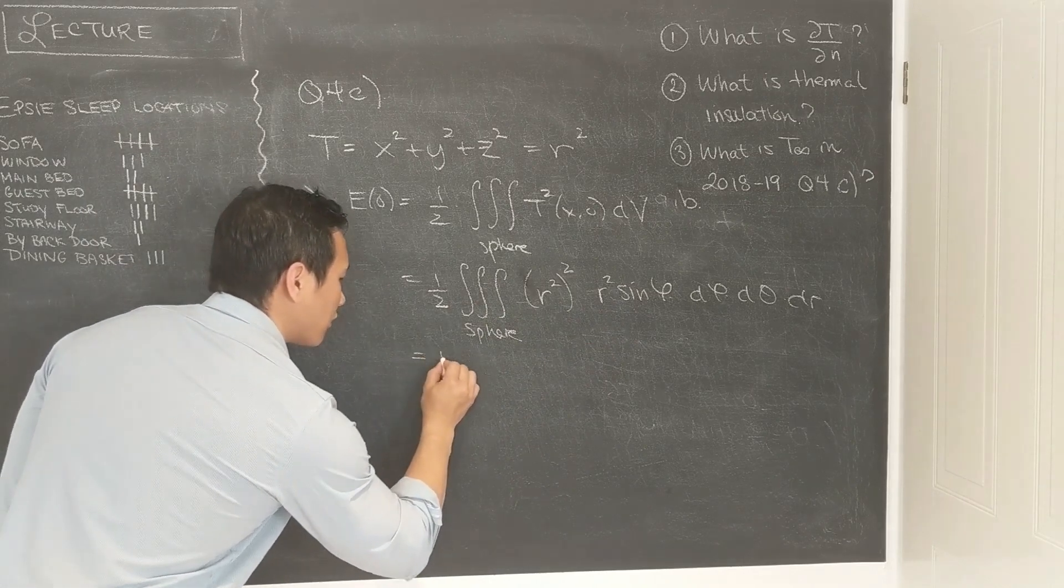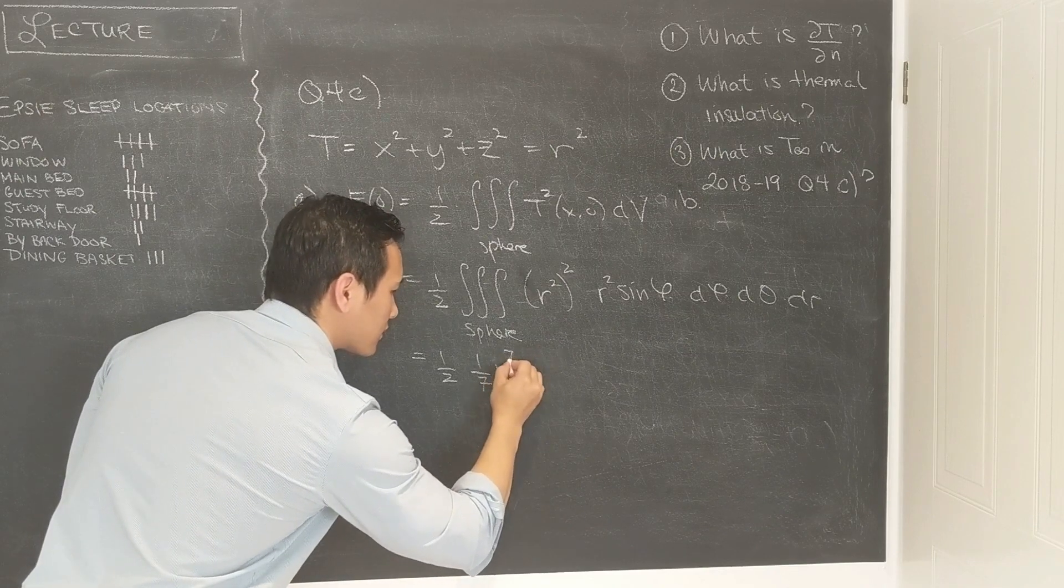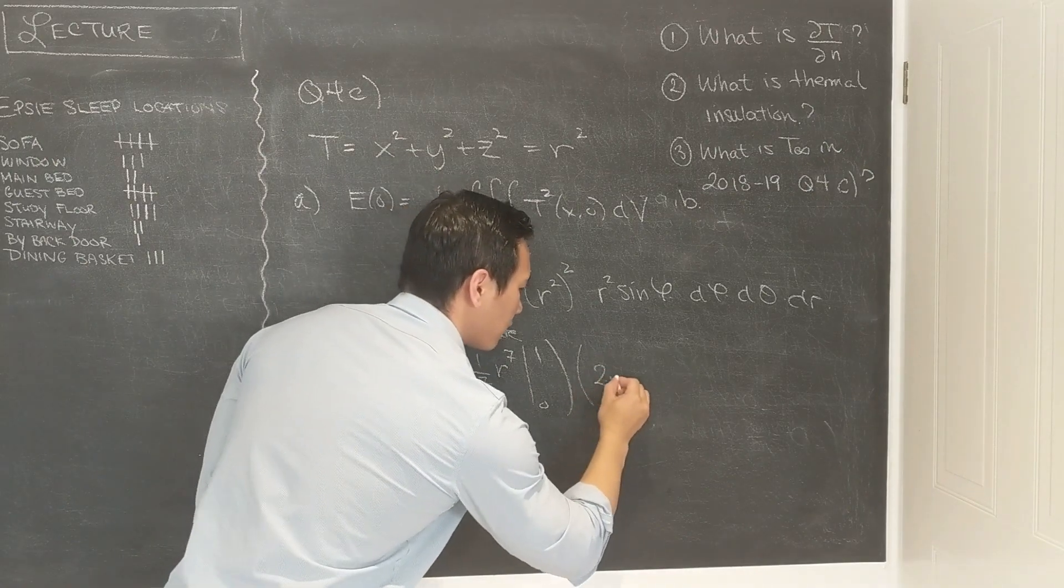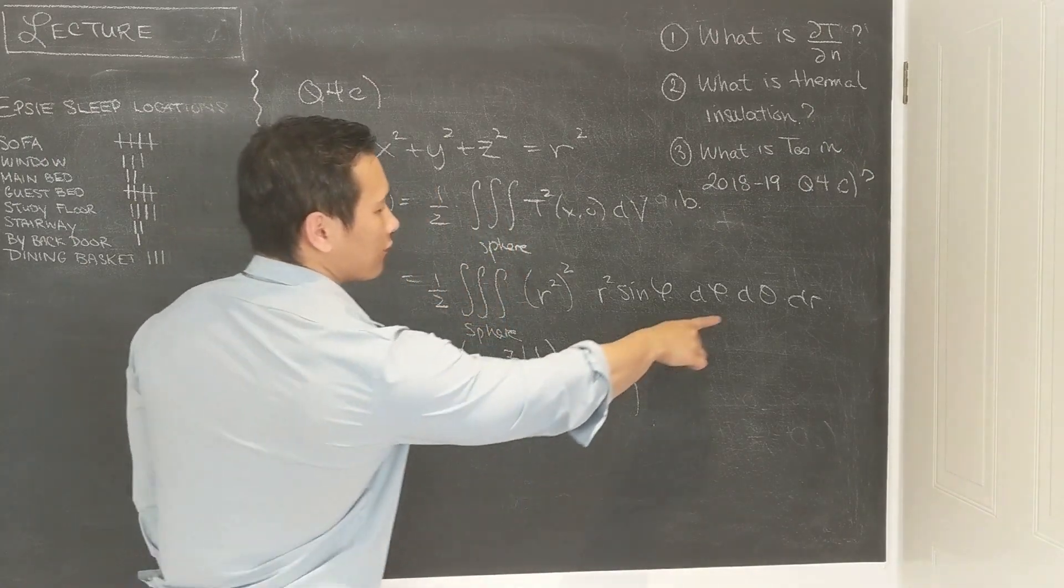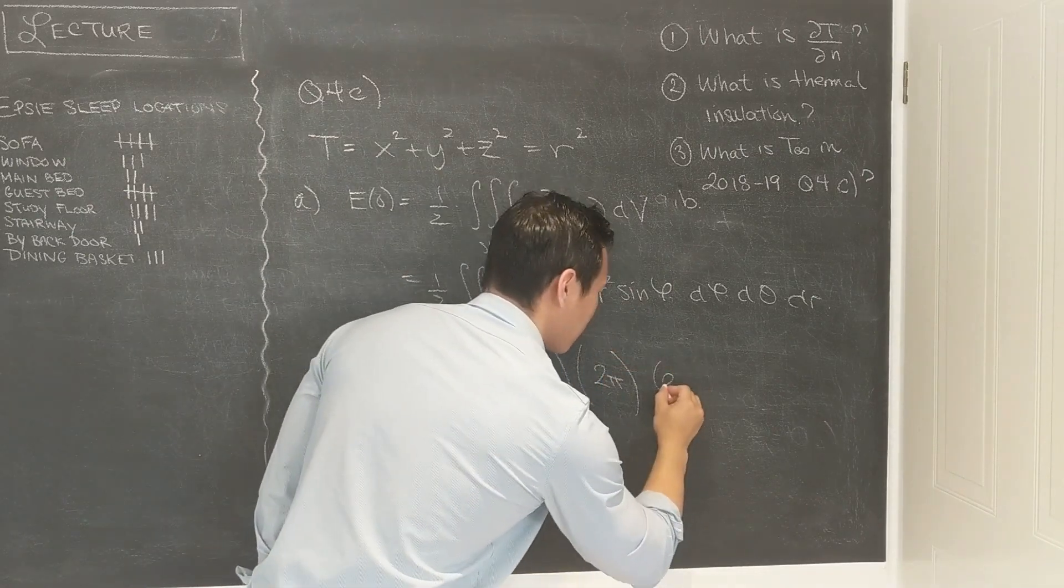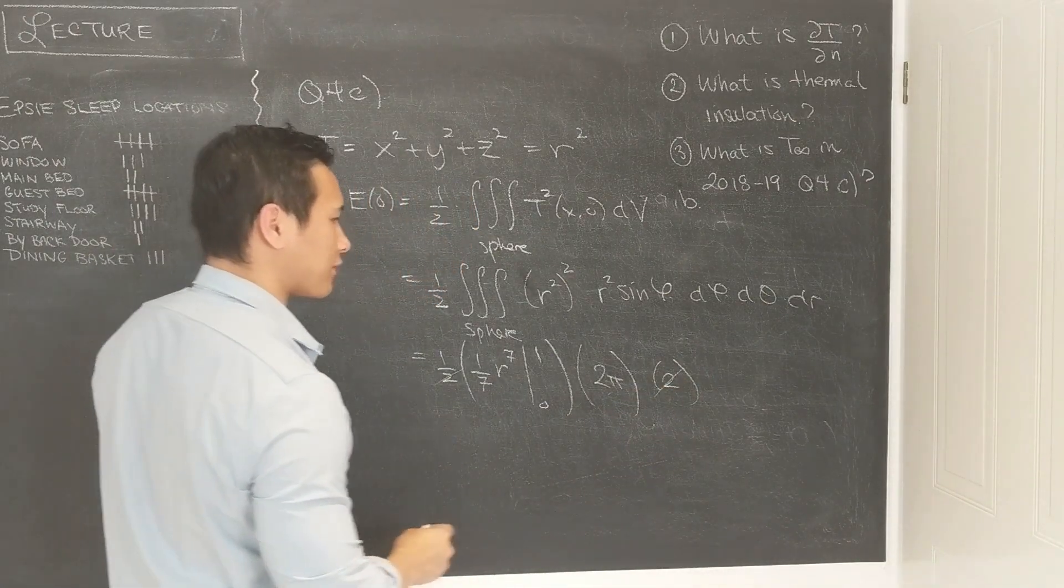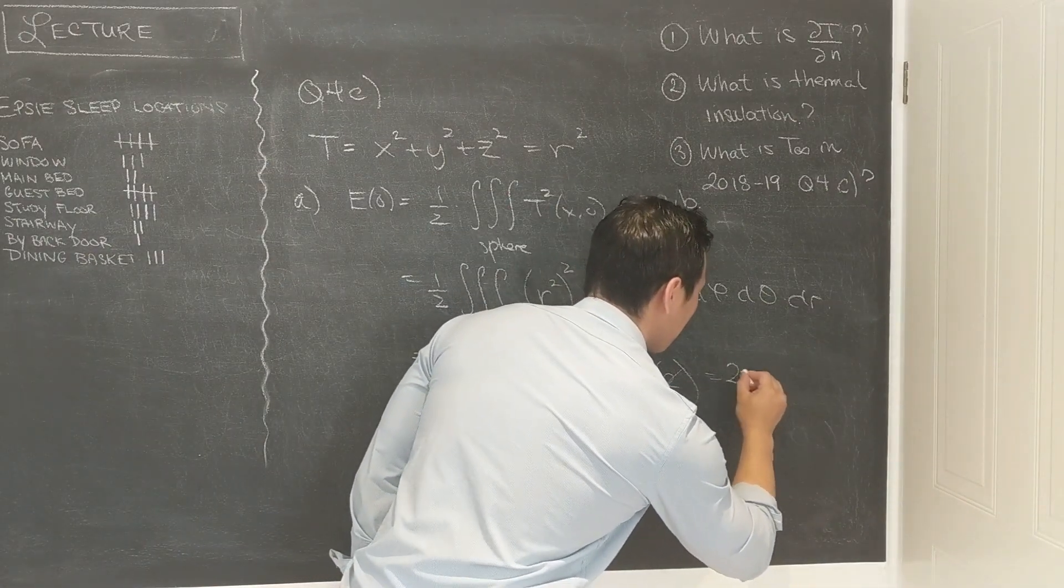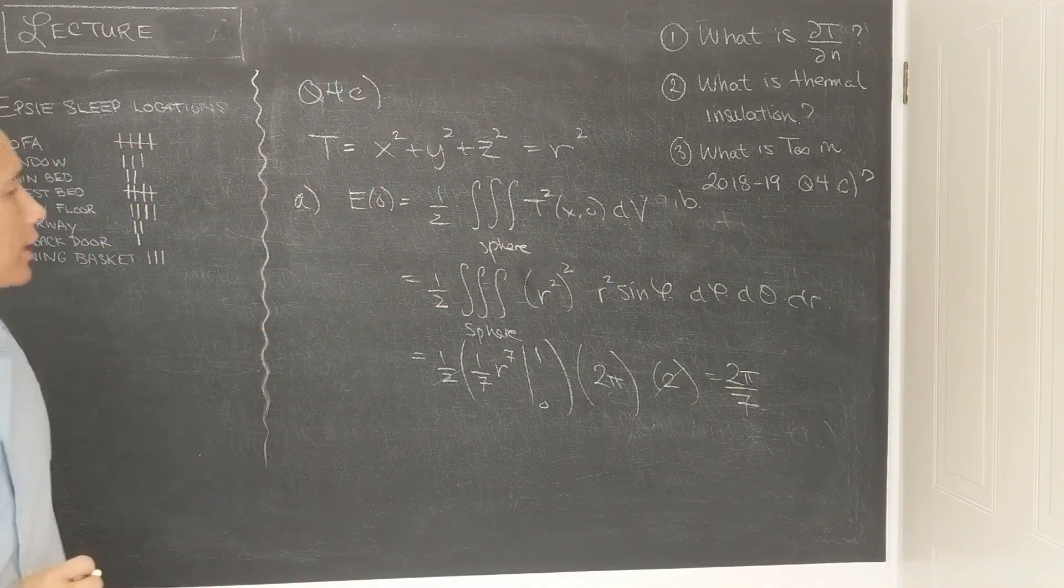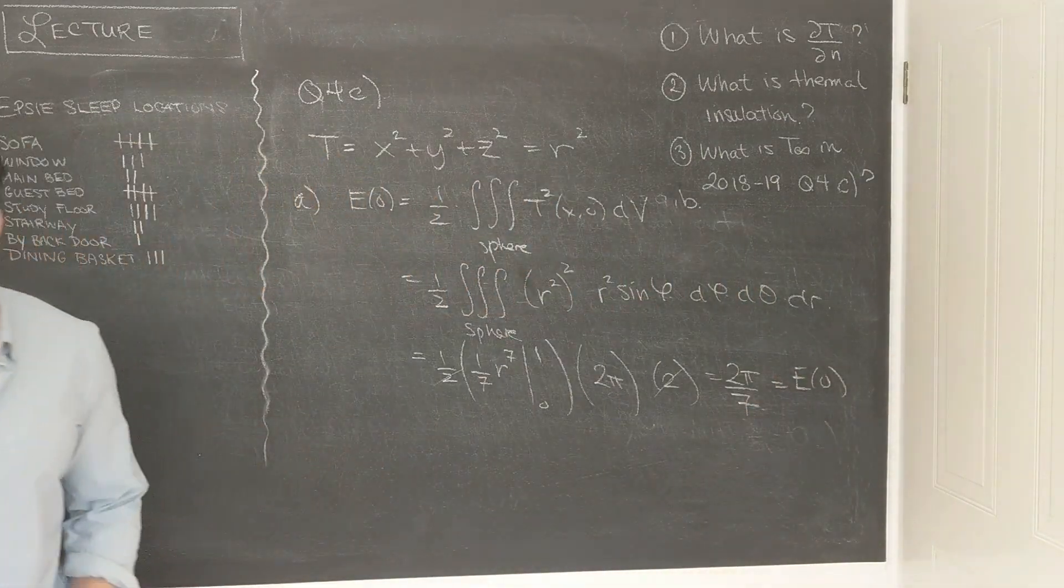So this is an integral of R to the 6, that gives you 1/7th, R to the 7th, evaluated from 0 to 1. And then you have to multiply that by 2π, which is the integral of d theta, and then multiply that by the integral of sine of phi from 0 to π, which is 2. So in total the 2's cancel, and it looks like you're left with 2π over 7. Hopefully I've done that right, I've done that calculation wrong a few times. But this we'd write as the initial energy. This is E of 0.